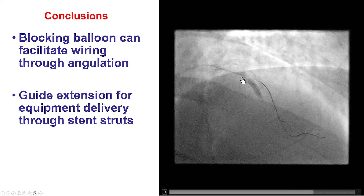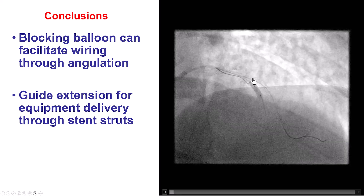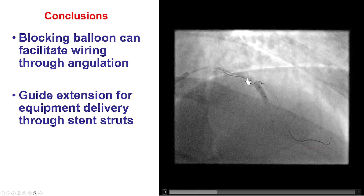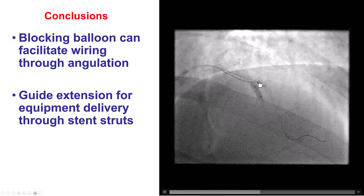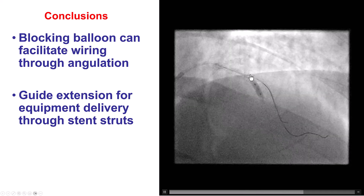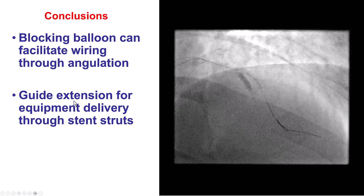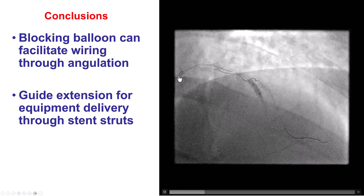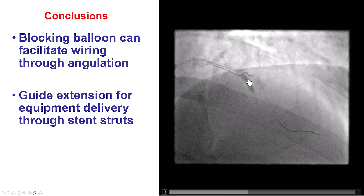In this technique, we inflate a balloon right after the ostium of the side branch, and that balloon blocks the wire from getting into the main vessel and helps direct it into the side branch. We then had difficulty delivering equipment over this guide wire, which was overcome by using a guide extension deeply intubated almost all the way to the origin of the diagonal branch. Thank you.